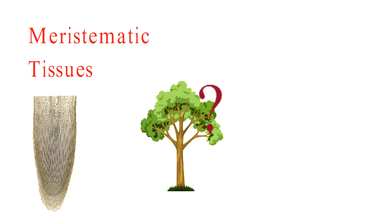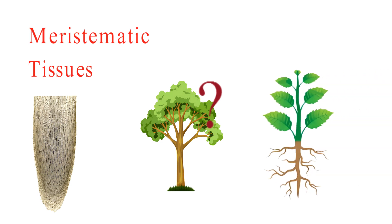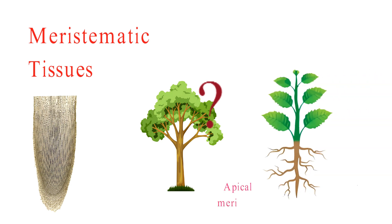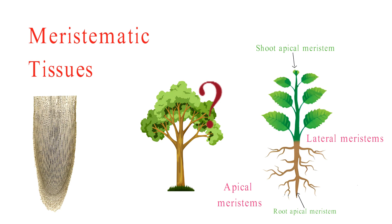But where exactly do we find these growth powerhouses? Time to distinguish between the two main types: apical meristems and lateral meristems. Apical meristems, like the root apical meristem and shoot apical meristem, are found at the tips of roots and shoots. They're responsible for primary growth.